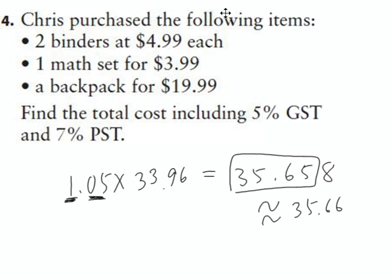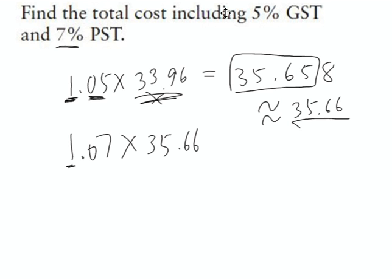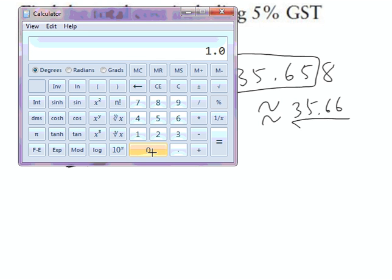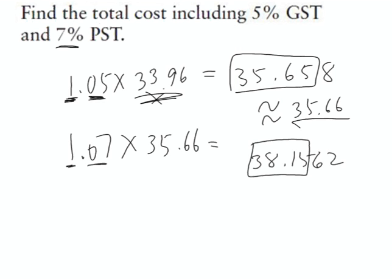The next thing we have to do is figure out the PST, which is 7%. So I'm going to multiply it again by 1.07, multiplied by not $33.96. No, we're going to multiply it by the new price of $35.66. So again, this 1 is going to give me the $35.66. This 0.07 is going to give me the tax. So 1.07 multiplied by $35.66 equals $38.1562. That's dollars, which means the answer is $38 approximately and $0.16, because we're going to round that up to the nearest penny. And that's your answer for question number four.